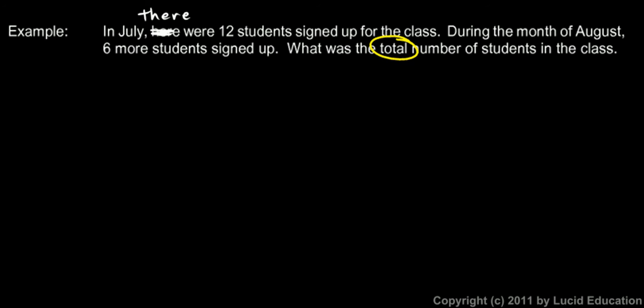And you're asked: what was the total? So the words 'more' and 'total' clue you in that you need to do addition. 12 plus 6, and the answer is 18. The addition here is obvious — 12 plus 6 is 18. The point here is recognizing the words, recognizing that certain words are commonly used to indicate addition.